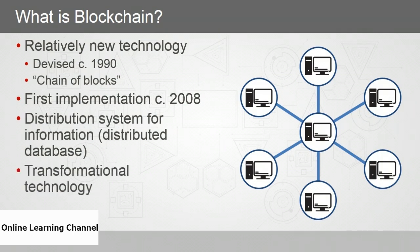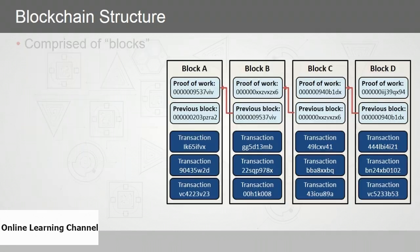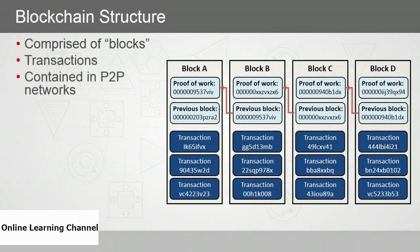Unless you've been living off-world the past few years, blockchain is considered to be transformational technology, and experts are calling it disruptive for good reason. As the name suggests, blockchains are comprised of blocks. You can think of blocks as transactions, and those transactions are contained in peer-to-peer networks. The contents of the blockchain database are determined by a simple majority of 51%.